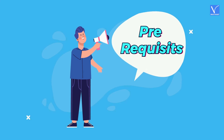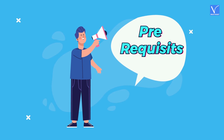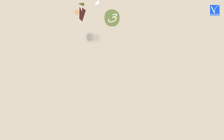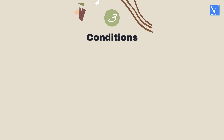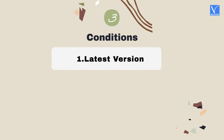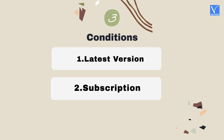What are the prerequisites for making a collaborative playlist on Apple Music? According to the Apple website, you must satisfy the below conditions. Condition 1: An iPhone or iPad with the latest version of iOS, or an Android with the latest version of Apple Music app. Condition 2: Subscription to Apple Music. Condition 3: Children under the age of 13 cannot collaborate.